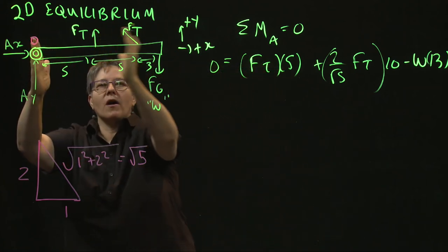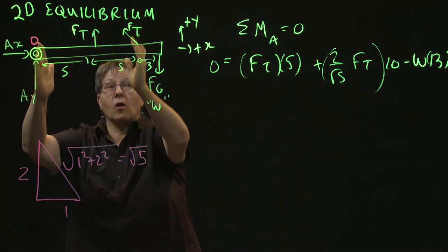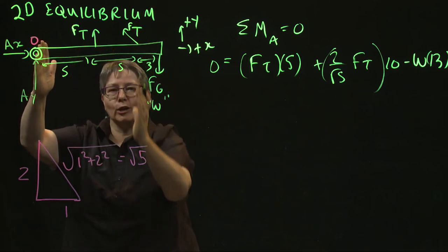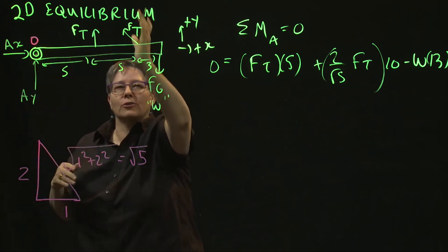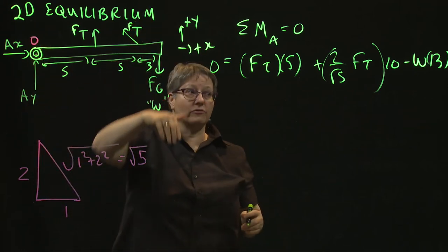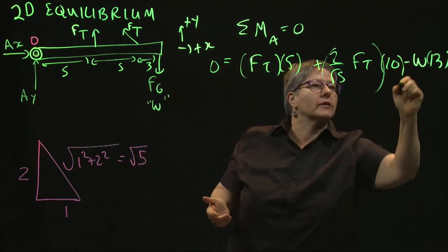Let's say, FT times five, this component times 10, because that's your moment arm, the perpendicular, the axes, the perpendicular distance to that component, and FG down 13. Yay! I'll put my brackets, especially with the 10.